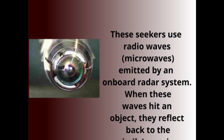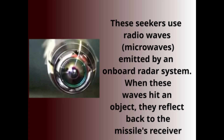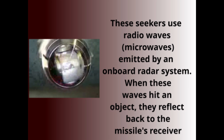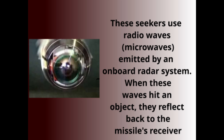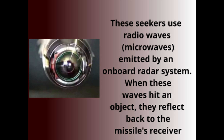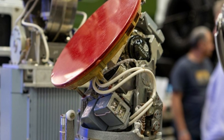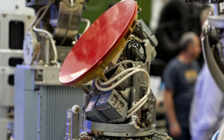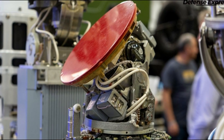Radar seekers: These seekers use radio waves emitted by an onboard radar system. When these waves hit an object, they reflect back to the missile receiver. By analyzing the reflected signal, the seekers can determine the target's location, speed, and direction. Radar seekers are effective for long-range targeting and can operate in various weather conditions.